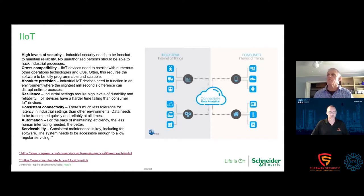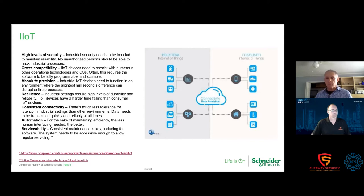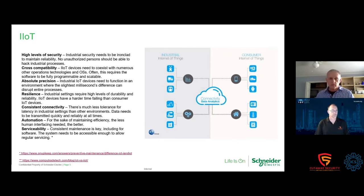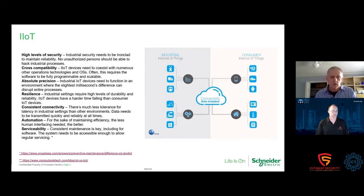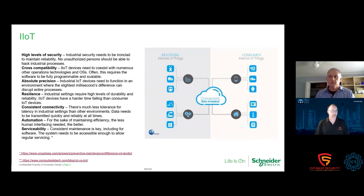Some of the major differences — and this is where we're concerned as architects and security people in the IoT world — we still have to have high levels of security and reliability. We can't have unauthorized persons hacking these processes because we deal with lives and safety. Cross-compatibility: some of these devices have to coexist with different operating systems. We have to have absolute precision — we can't have something disrupt the process. In the IT world, you reboot. In the process world, it's not so simple.